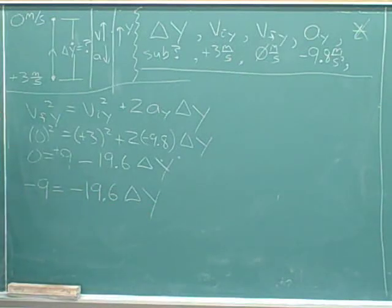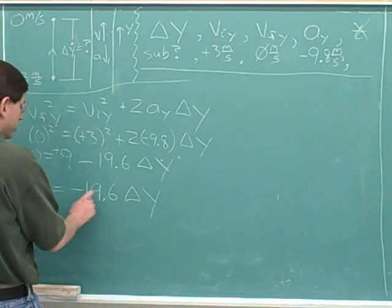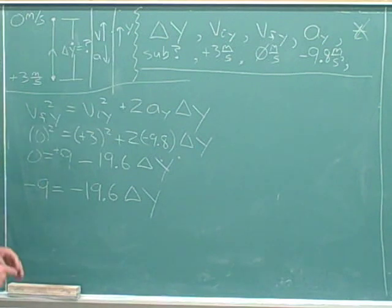Now we can continue to get the delta y by itself. We need to detach this negative 19.6. Well, let's do the opposite.